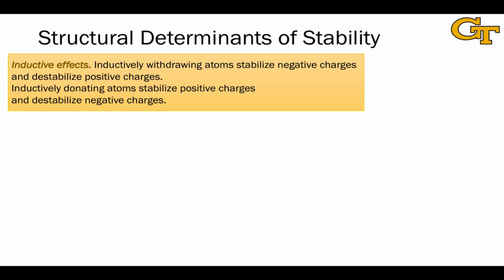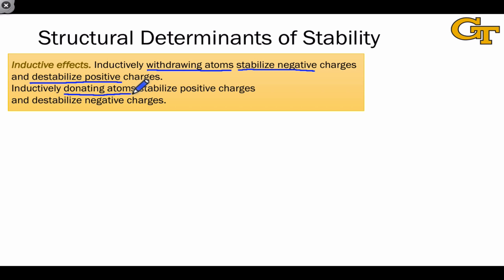Focusing on the effect of electron-withdrawing and -donating atoms on charged species, we can state the following stability trends. Inductively withdrawing atoms — electronegative atoms like fluorine, bromine, chlorine, etc. — stabilize negative charges and destabilize positive charges. We saw this in the stabilization of the fluoroacetate anion with respect to the acetate anion. Inductively donating atoms — like silicon, and most importantly, alkyl groups — stabilize positive charges and destabilize negative charges. The conjugate acid of the neutral silicon-containing structure would be positively charged, and it is the stabilization of that structure that results in increased basicity in the neutral molecule containing the silicon atom.